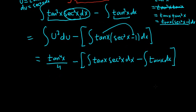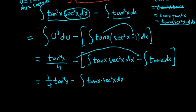All right, good stuff. Let's go ahead and distribute the minus sign. So this is, let's write this as 1/4 tangent to the 4th x minus, and then here we have integral of tangent x times secant squared x dx. Then minus and minus is plus. So plus the integral of tangent x dx.